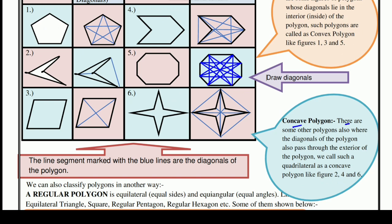There are some other polygons also where the diagonals of the polygon pass through the exterior of the polygon. We call such a polygon a concave polygon, like figures 2, 4, and 6. You can see the diagonal simultaneously in the interior and on the exterior side of the polygon.